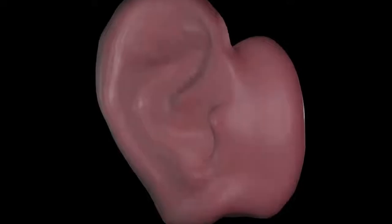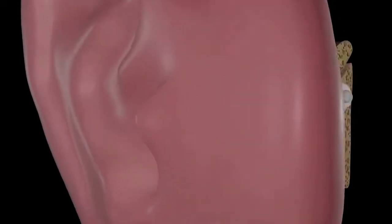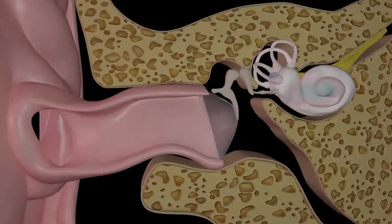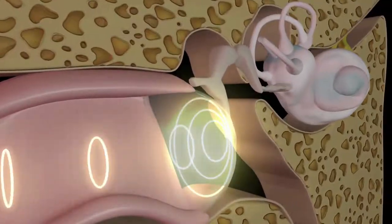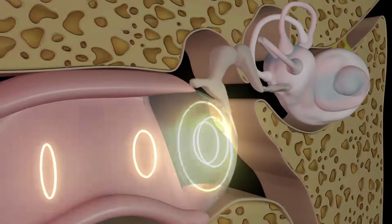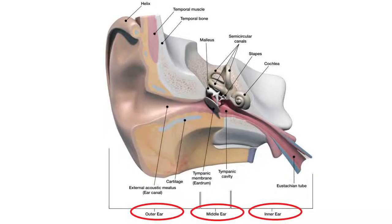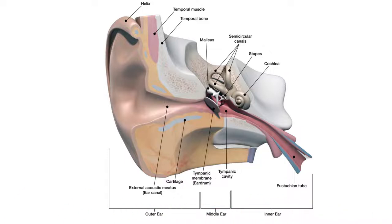Step 1: The sound enters the ear, travels through the ear canal, and reaches the eardrum. The ear is the first organ of hearing and is composed of the outer ear, middle ear, and inner ear.